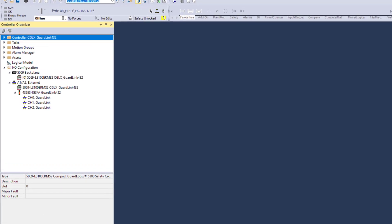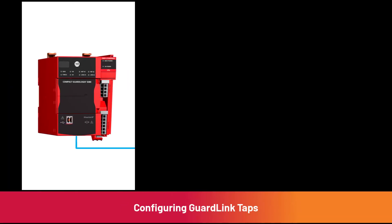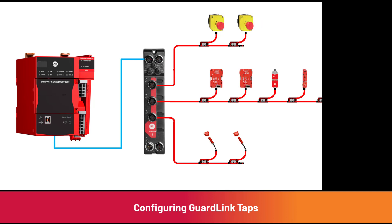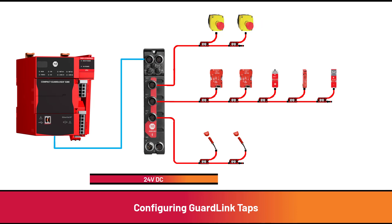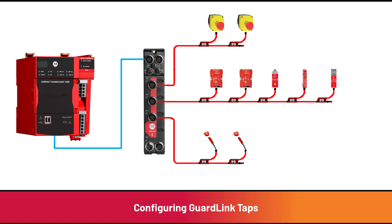In a previous video, the 432ES-IG3 was added to the GuardLogix IO configuration. The next step is to add devices to each GuardLink channel. If the GuardLogix processor is available and all GuardLink devices have been connected and powered up, then device discovery can be used to automatically populate each GuardLink channel. If program development is taking place before hardware is powered up, then the taps are manually added to the IO configuration.